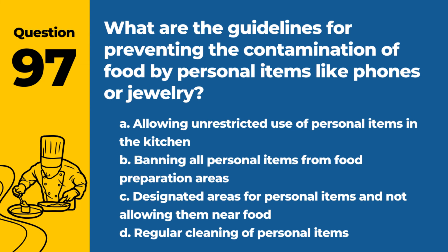Question 97. What are the guidelines for preventing the contamination of food by personal items like phones or jewelry? a. Allowing unrestricted use of personal items in the kitchen. b. Banning all personal items from food preparation areas. c. Designated areas for personal items and not allowing them near food. d. Regular cleaning of personal items. Answer: c. Designated areas for personal items and not allowing them near food. This helps prevent cross-contamination.